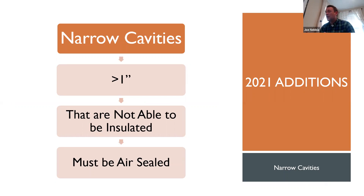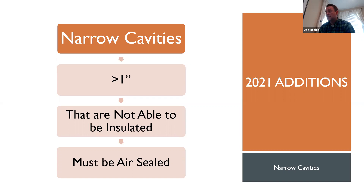One addition to the code goes along with this: we already know we have to cut insulation to fit the narrow cavity — we can't just squeeze it in because we don't want to compress it. But the code now also points out that if you've got a space that's less than one inch, the code says you can air seal it instead of insulating it. That makes a lot of sense because there's not a lot of insulating products other than spray foam that can realistically go into a less-than-an-inch cavity. The code specifically says that space must be air sealed. Please note that the slide should say 'less than an inch.'